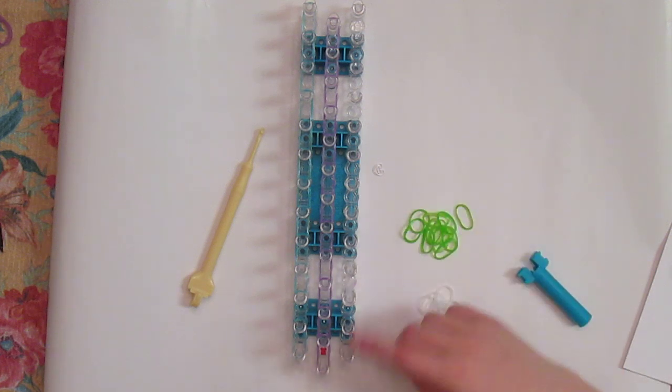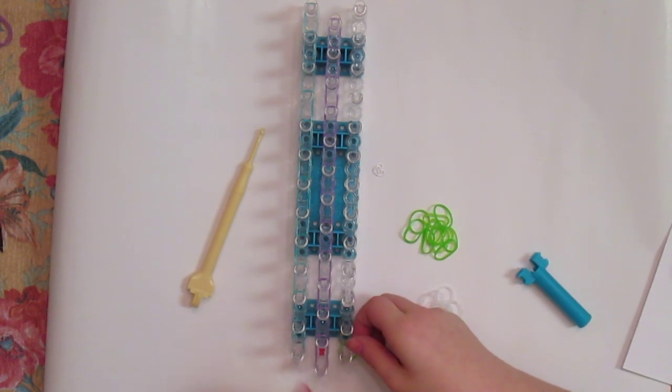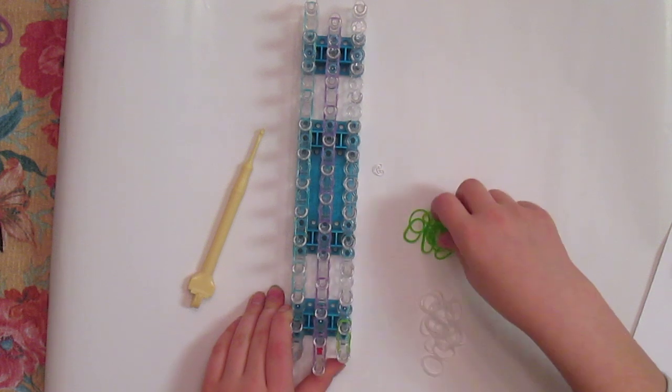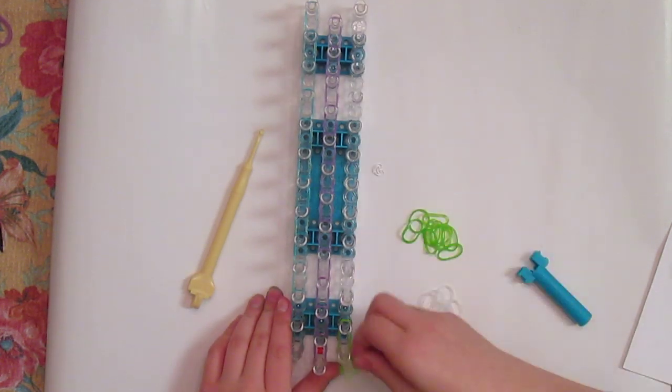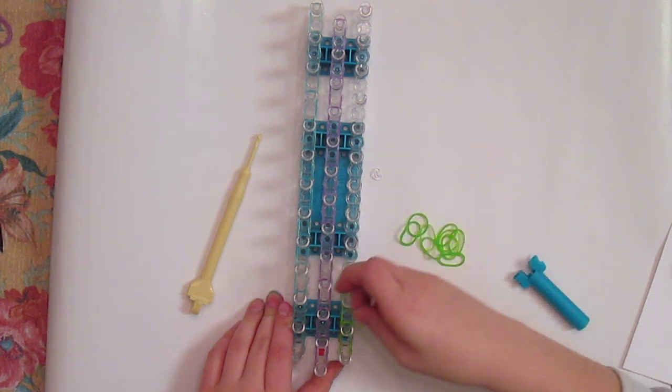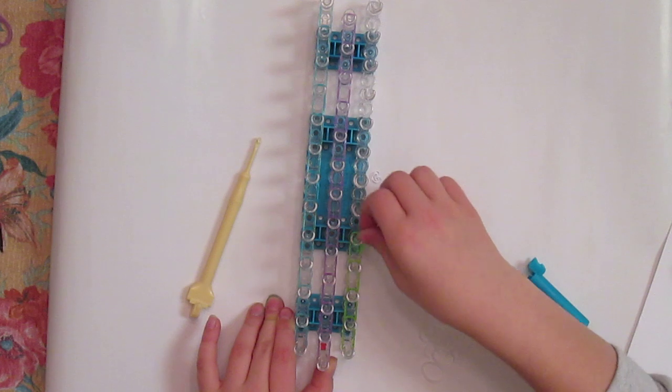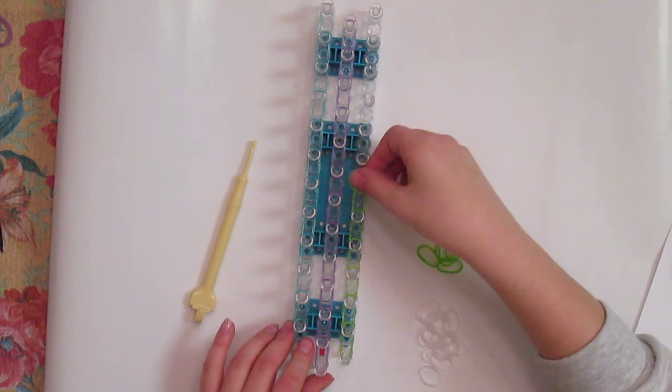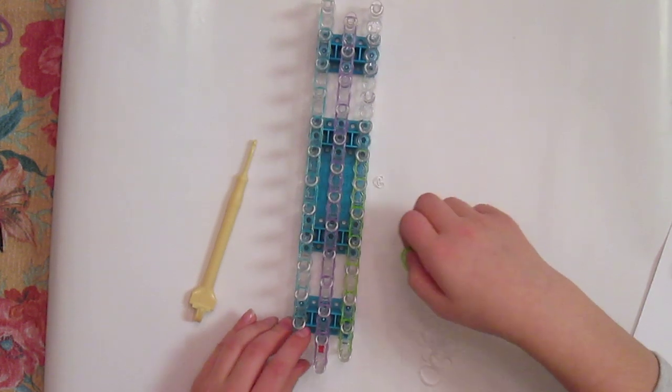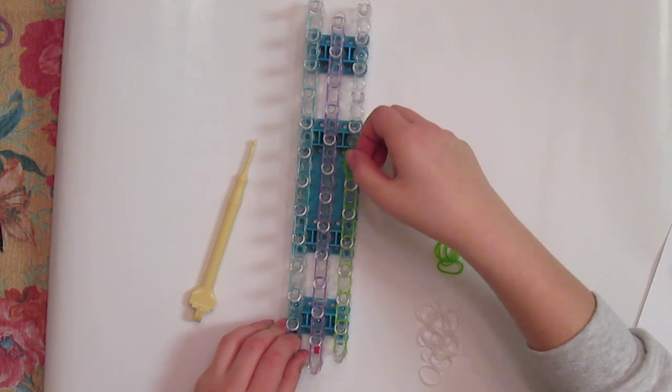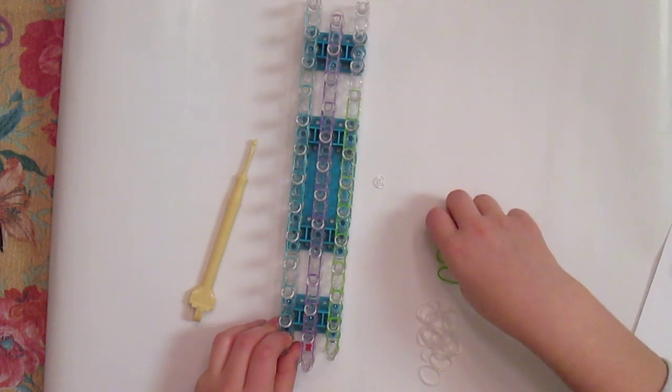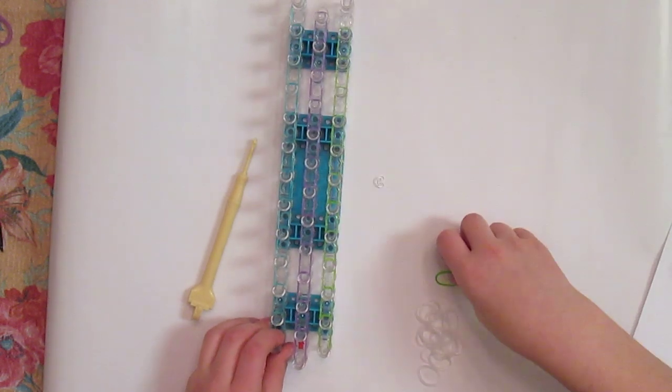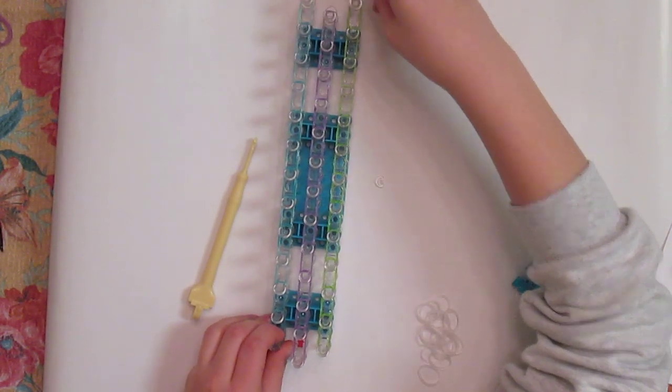Now get to your last row and choose your last color. Mine will be green. I'll be starting from the third pin. Well, my third pin on the third row. And go forward from this pin all the way to the end with your 12 rubber bands. And this is what your loom should look like when you have finished.